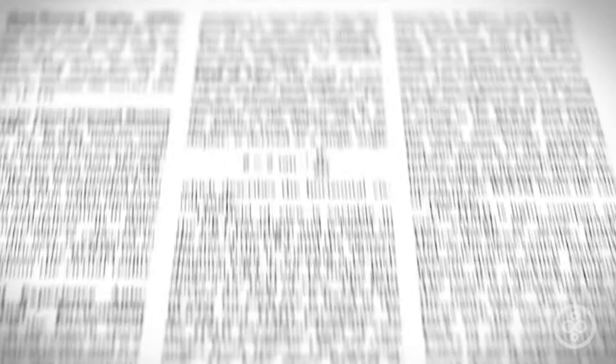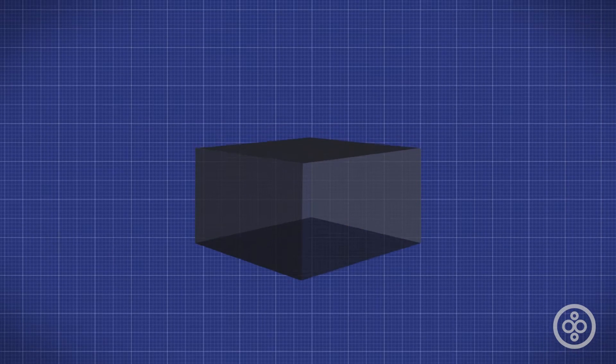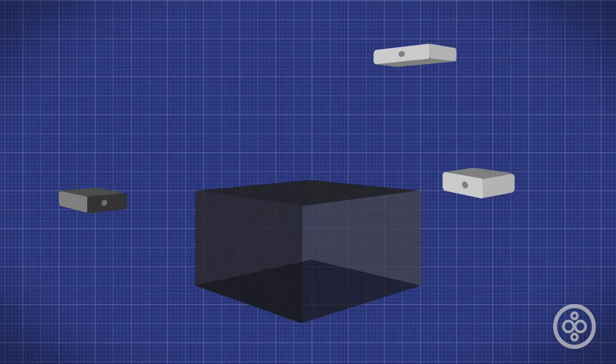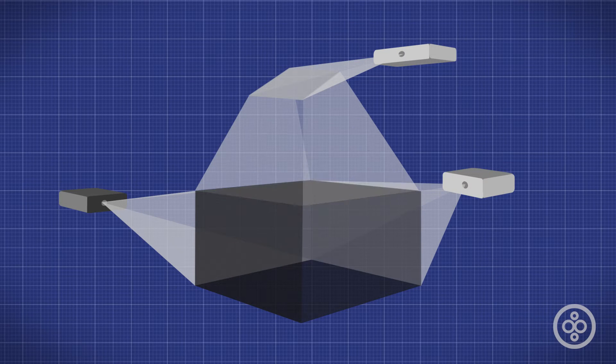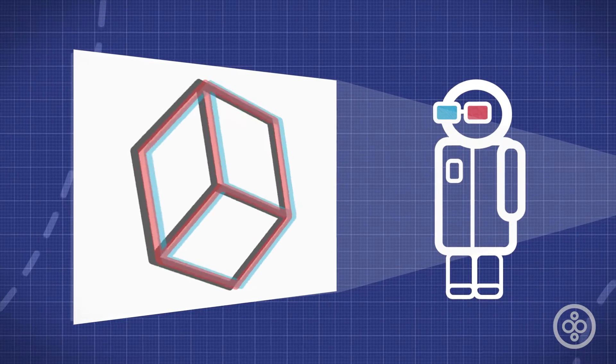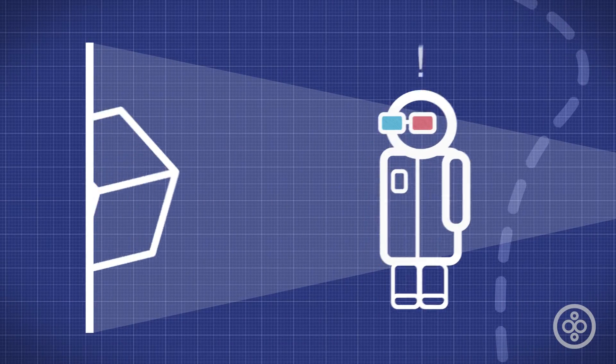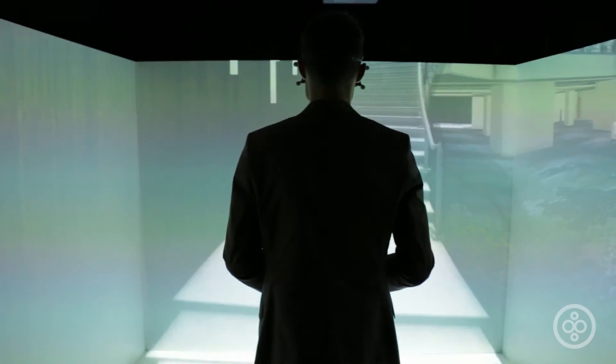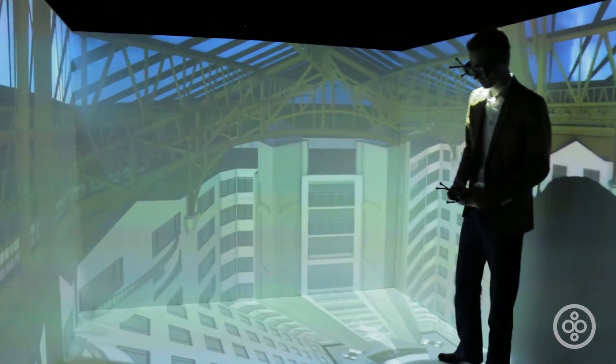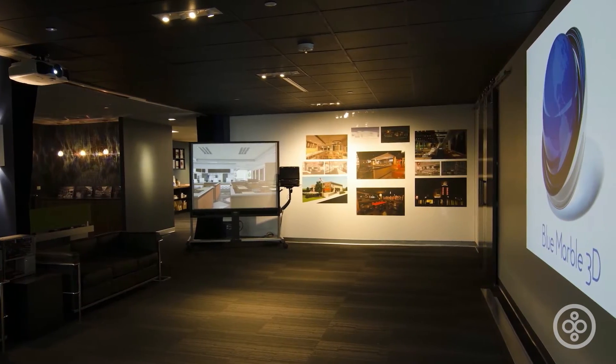Electronic visualization laboratories developed what they called the cave, a five-walled cube consisting of three walls, a floor, and a ceiling. Three stereoscopic projectors cast images onto the walls and floor, while the user wore a pair of 3D glasses that split the offset red and blue colors on the screen to simulate depth. This cave technology is actually still in use today by various visualization companies such as Blue Marble 3D.